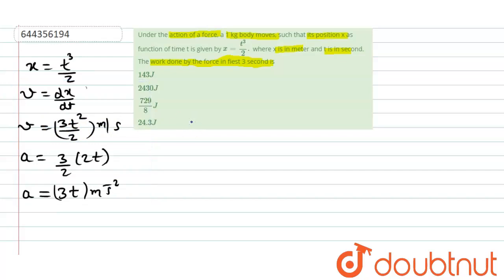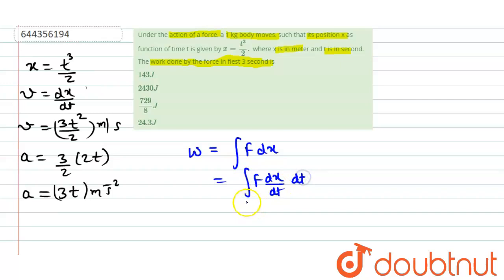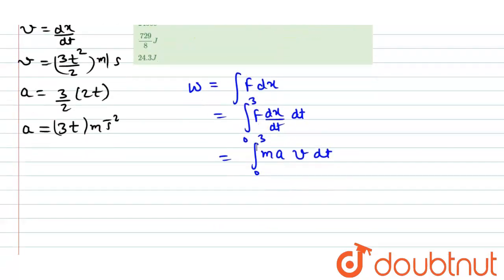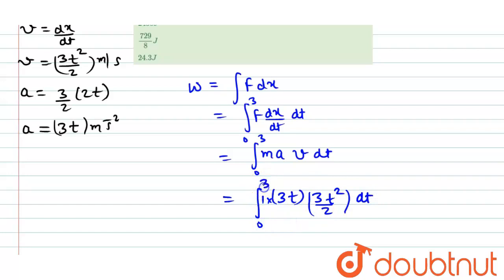Let's find out. We have to find the work done, which is equal to ∫F dx, and we can write it as ∫F (dx/dt) dt. So we can write it as: mass is 1 kg, acceleration is 3t, velocity is 3t²/2, integrated with respect to dt, with time varying from 0 to 3 seconds.